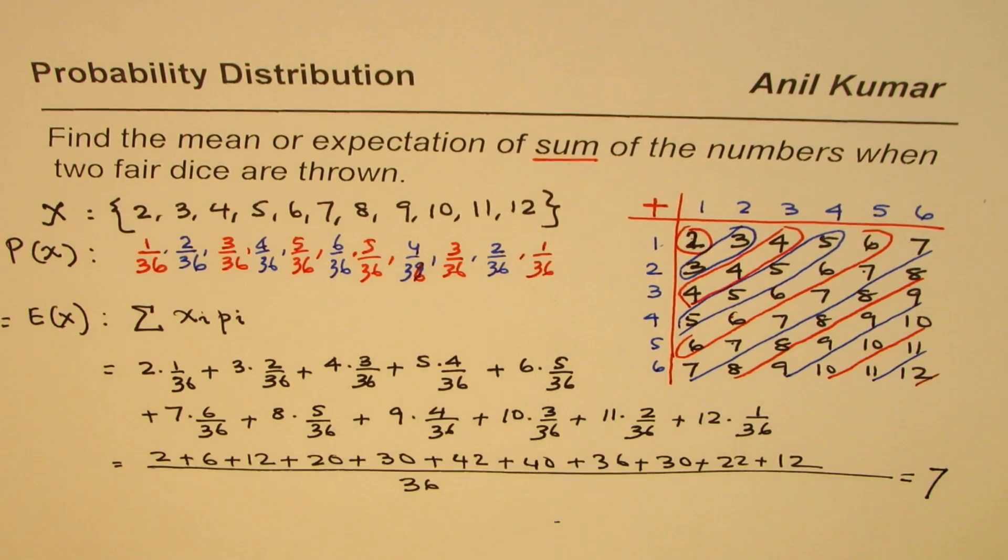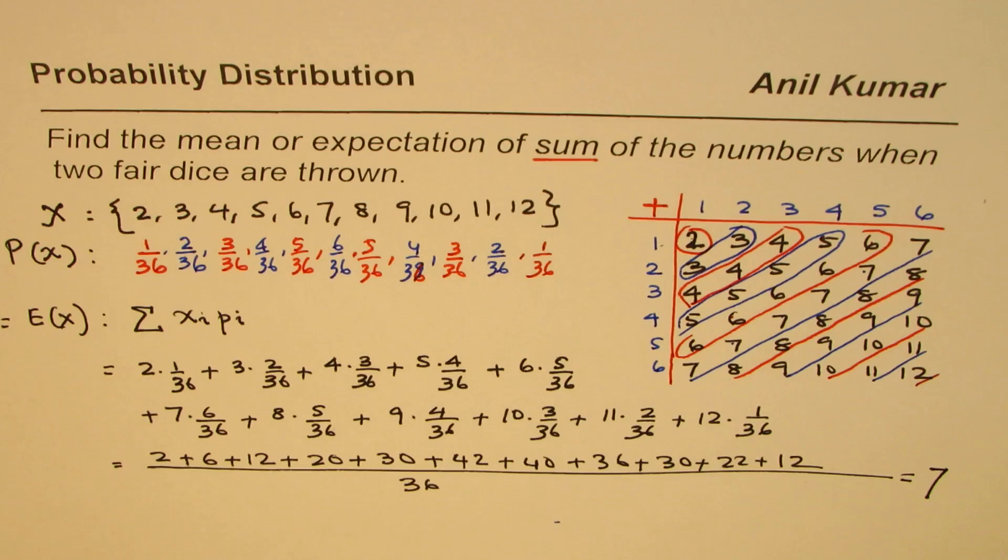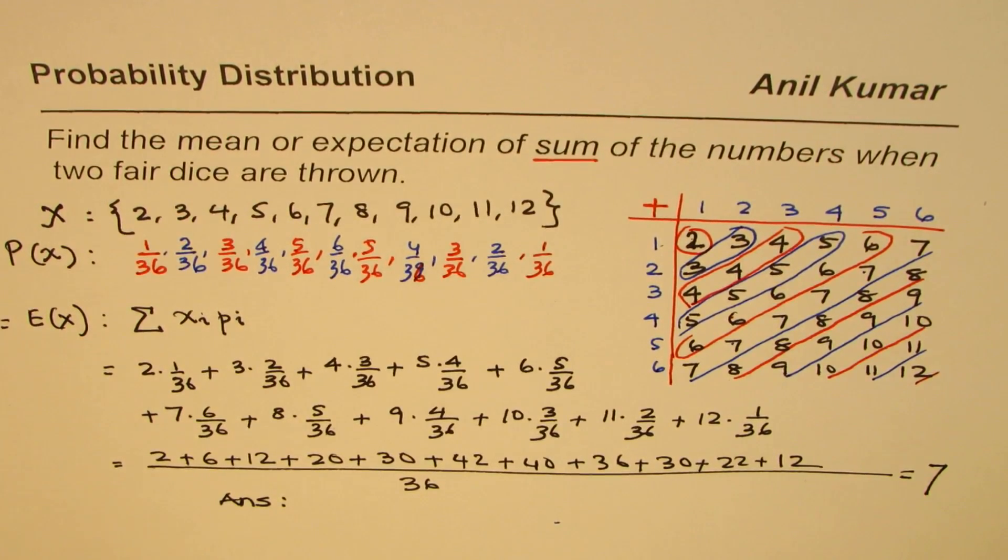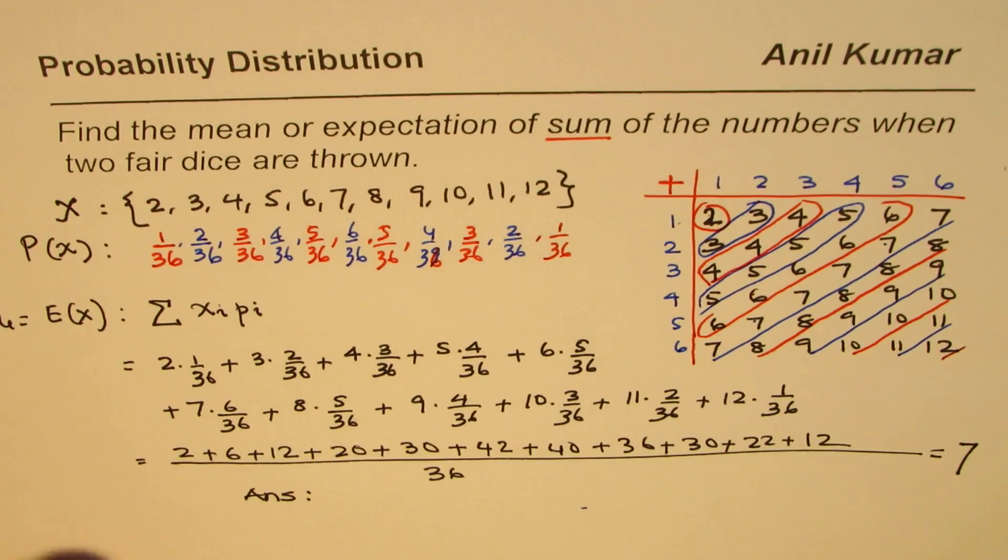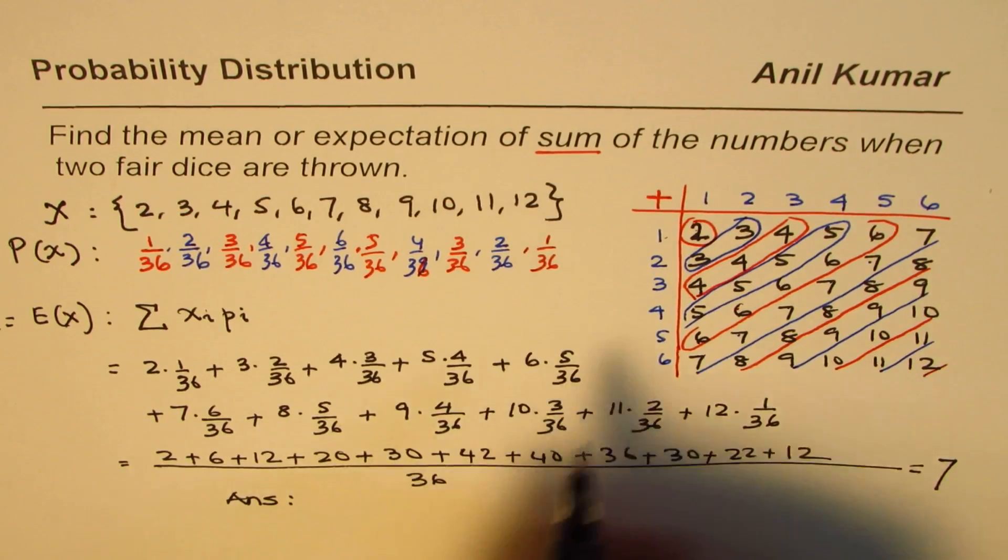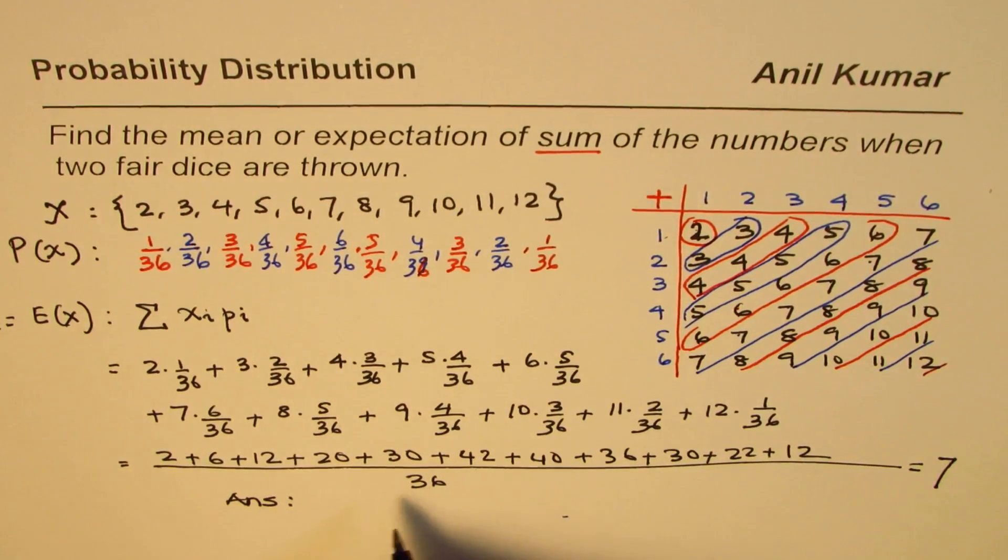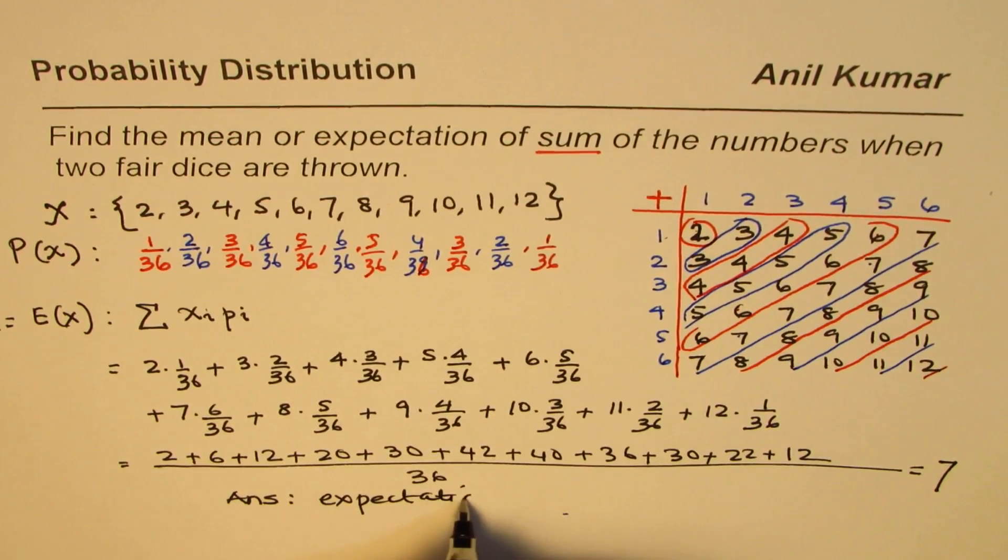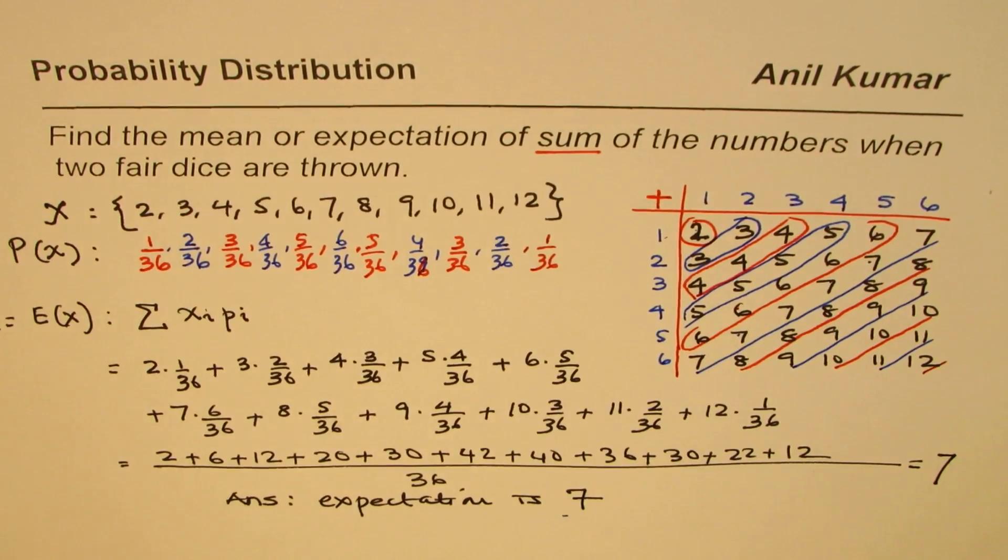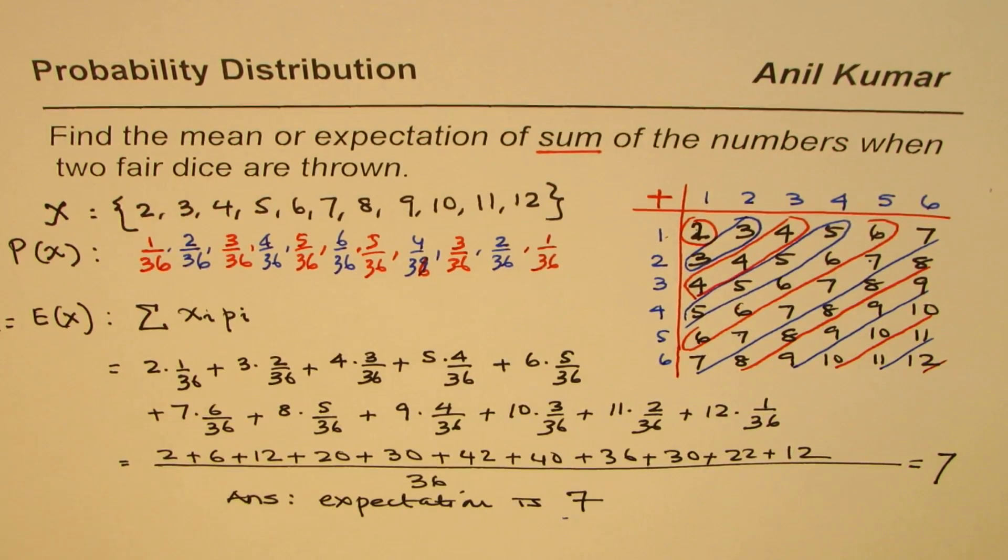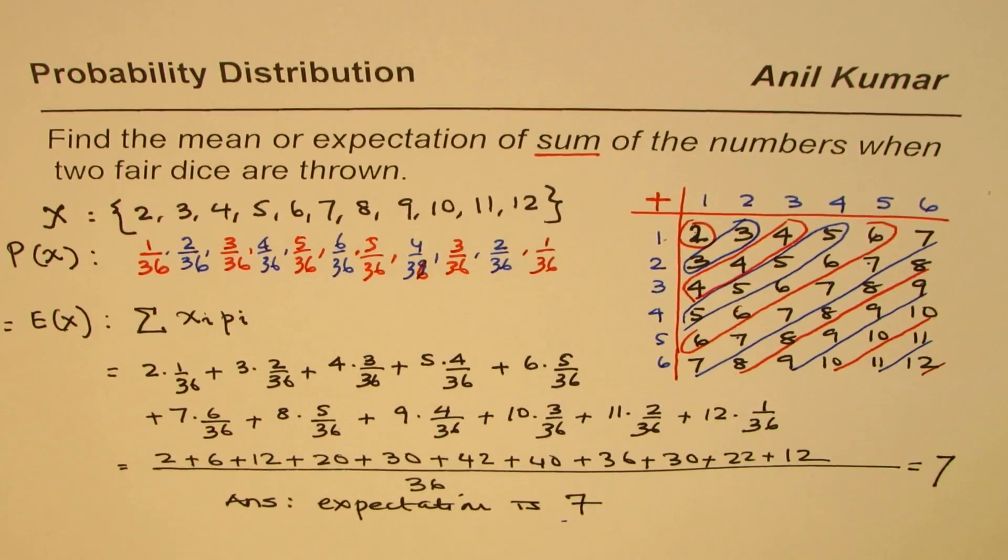So that is the expected value. Therefore, the answer is that the expected value is 7. We also call this the mean, so the expectation or mean is 7 in this particular experiment. I'm Anil Kumar, and I hope that helps. Thank you and all the best.